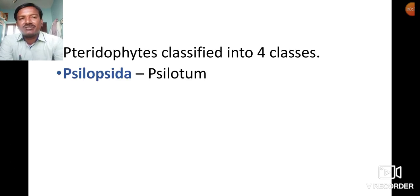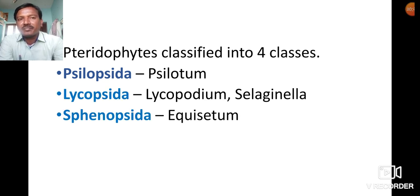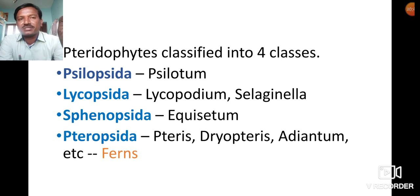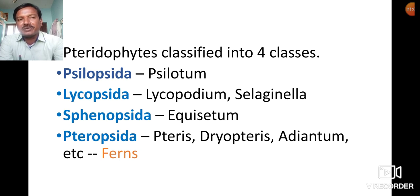Pteridophytes are classified into four classes: Psilopsida (example: Psilotum), Lycopsida (examples: Lycopodium and Selaginella), Sphenopsida (example: Equisetum), and Pteropsida (examples: Pteris, Dryopteris, Adiantum, etc.). The fourth class, Pteropsida, is commonly called ferns.